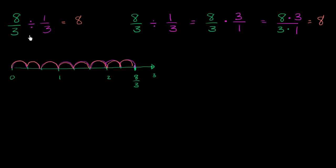Now, let's see if this still makes sense. Instead of dividing by 1 third, if we were divided by 2 thirds. So let's think about what 8 thirds divided by 2 thirds is. Divided by 2 thirds. Well, once again, this is like asking the question, if we wanted to break up this section from 0 to 8 thirds into sections of 2 thirds or jumps of 2 thirds, how many sections or how many jumps would I have to make?